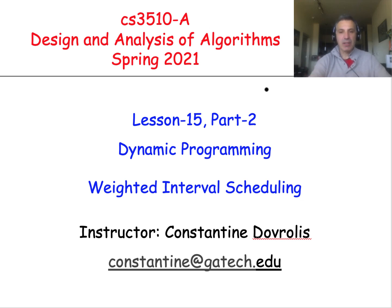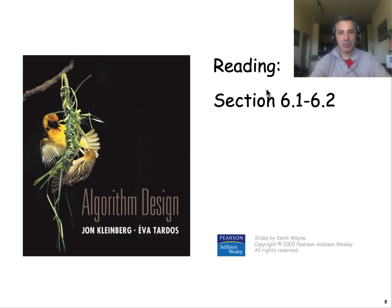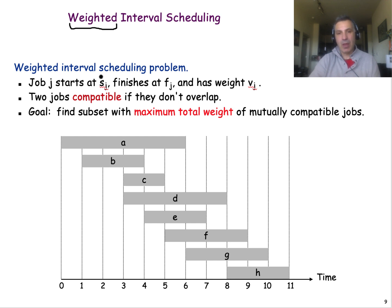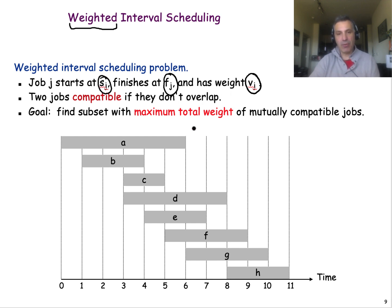Let's apply the ideas we discussed earlier to a specific problem referred to as the weighted interval scheduling problem. You have seen a variation of this problem in the part about greedy algorithms, but in that case we didn't have weights. We have n jobs, and for each job we have the start time, the finish time, and also a weight. We like jobs with larger weight — think of the weight as the value of the job.